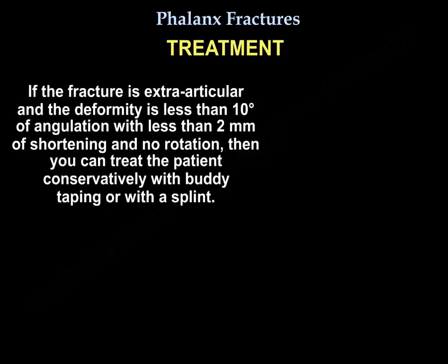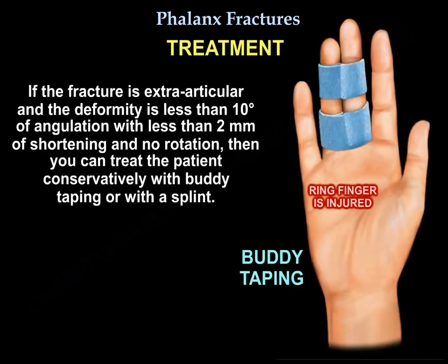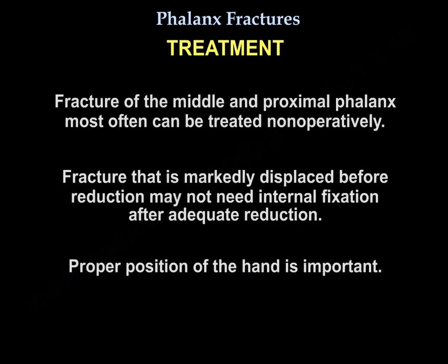For treatment, if the fracture is extra-articular and the deformity is less than 10 degrees of angulation, less than 2 mm of shortening, and no rotation, you can treat the patient conservatively with buddy taping or a splint. Fractures of the middle and proximal phalanx most often can be treated non-operatively. A markedly displaced fracture before reduction may not need internal fixation after adequate reduction.